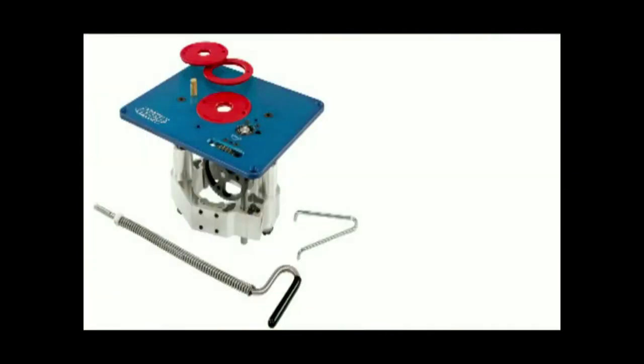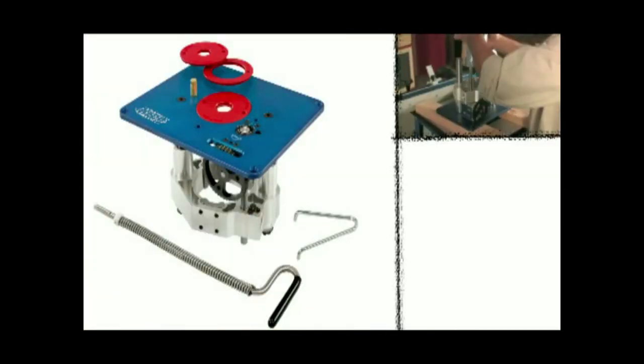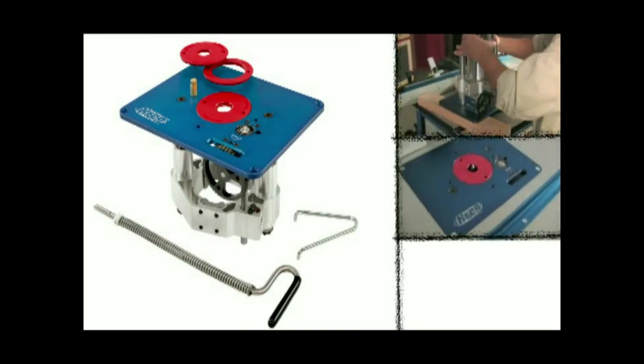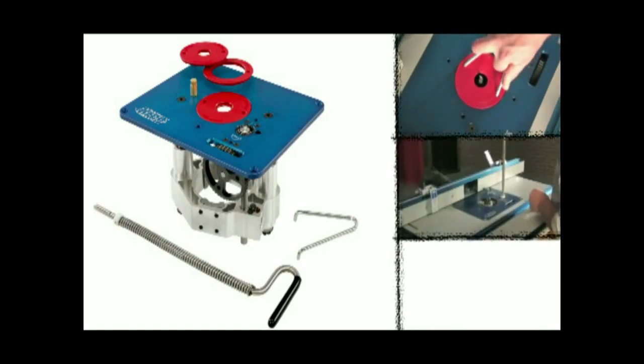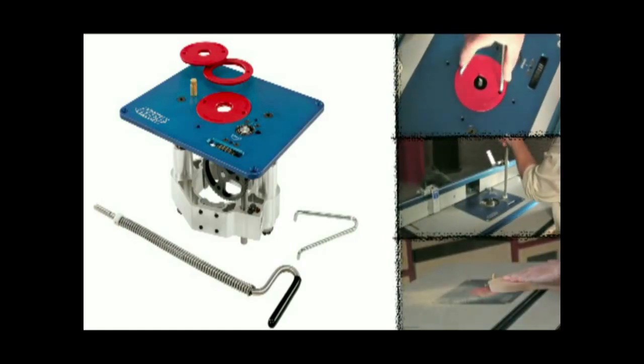The Craig Precision Router Table Lift includes the motor support assembly, aluminum insert plate, three sizes of twist lock insert rings, spanner wrench, a lift wrench, and a threaded steel starting pin.